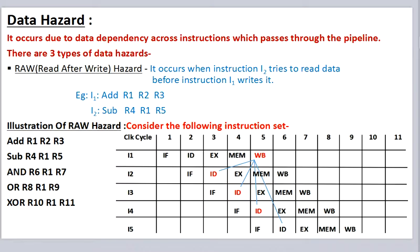Let us illustrate this hazard with the help of an example. Suppose we have the following instruction set. We see all the instructions from i2 to i5 have a read after write dependency for r1. Now the updated value of r1 will be available only after the write back stage of instruction 1. But instructions i2, i3, and i4 fetch the value of r1 in their ID stage, that is before the write back stage of the first instruction. Hence all instructions i2, i3, and i4 get an unupdated or wrong value of r1, so there is a hazard.